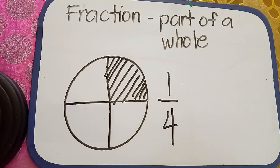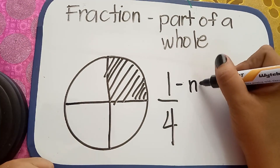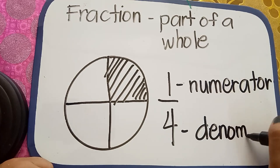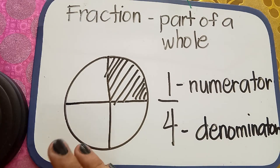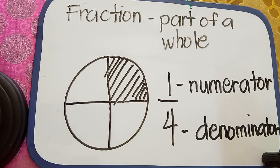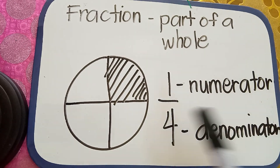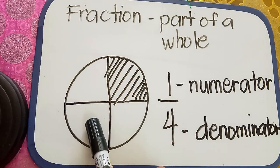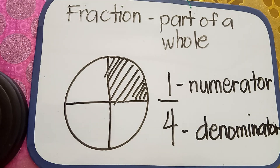Just like the human body, a fraction also has parts. The upper part is called the numerator, and the lower part is called the denominator. So what's the difference between numerator and denominator? On this example, we have a pizza. Then we divided it into four equal parts — one, two, three, four. That is the denominator. The denominator tells us how many parts the whole was divided. So in this whole pizza, we divided it into four, so our denominator is four.